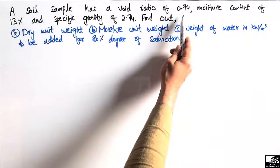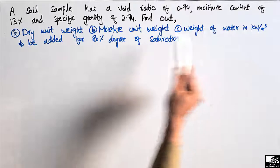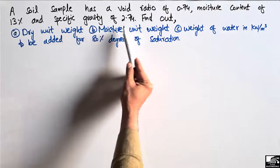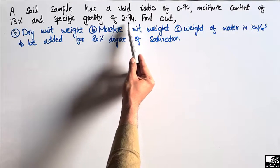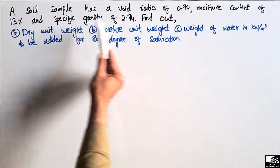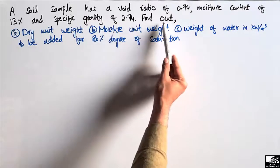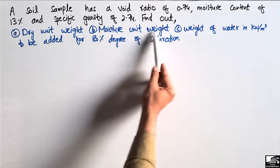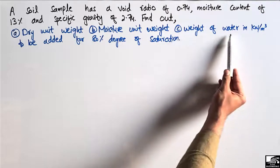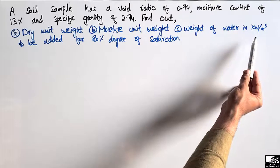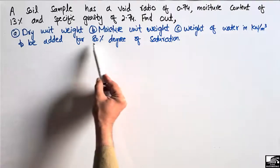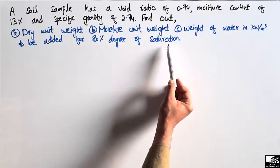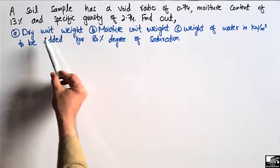The numerical problem states that a soil sample has a void ratio of 0.74, moisture content of 13%, and specific gravity of 2.74. These are the given data. We need to find the dry unit weight, the moisture unit weight, and the weight of water in kN per cubic meter to be added for 80% degree of saturation.